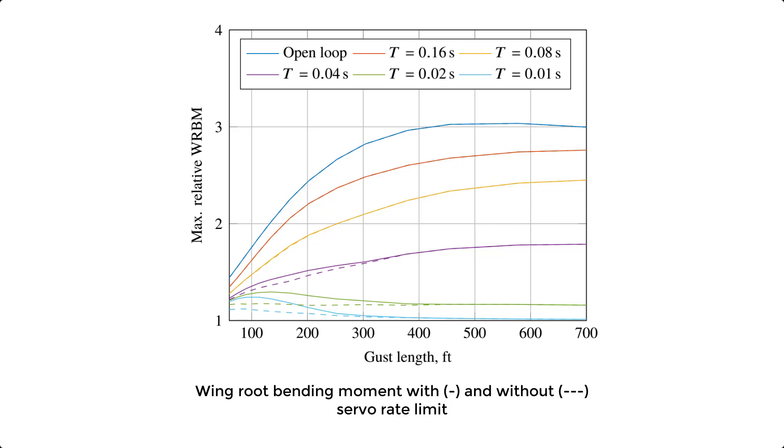The solid lines in this figure take into account a rate limitation of the servos of 100 degrees per second. The dashed lines have no rate limit, resulting in slightly lower loads for the short gusts.